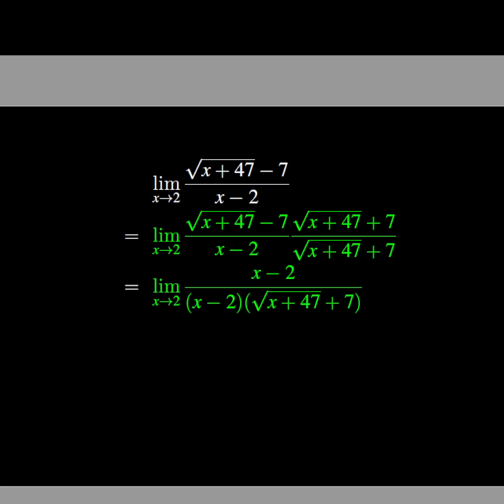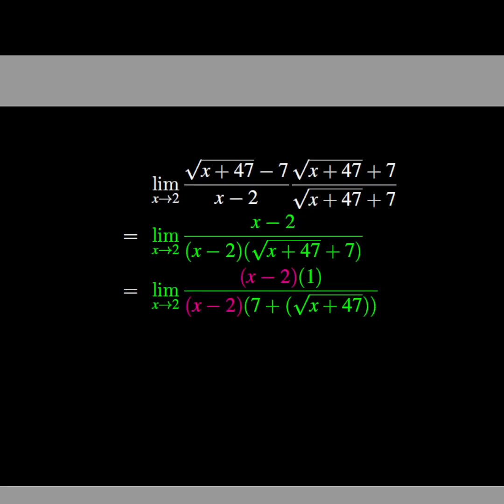After simplification, the expression becomes (x - 2) over ((x - 2)(√(x+47) + 7)). We can see that we can factorize both numerator and denominator, and after factorization, identify the common factor.